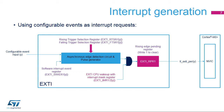Finally, a flag is set in the EXTI-RPR1 register when the interrupt is generated to the NVIC. This flag enables the software to determine the cause of the interrupt. This flag is expected to be cleared by the interrupt service routine.